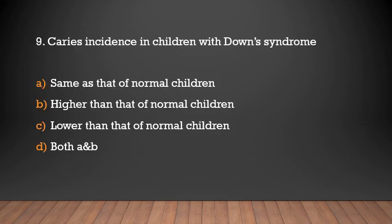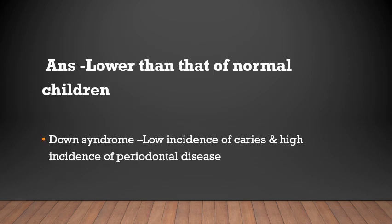Caries incidence in children with Down syndrome is: same as that of normal children, higher than that of normal children, lower than that of normal children, or both A and B? Answer: Lower than that of normal children. Patients with Down syndrome show low incidence of caries and high incidence of periodontal disease.